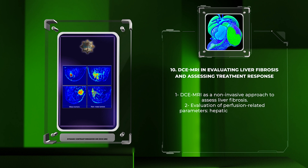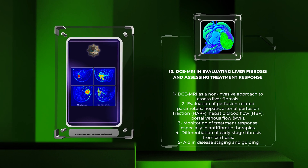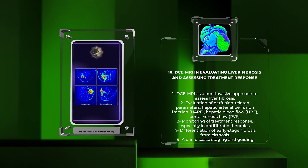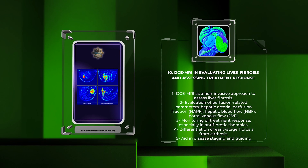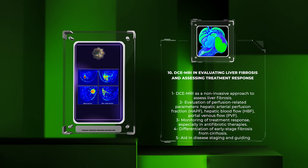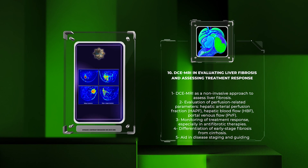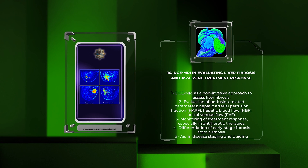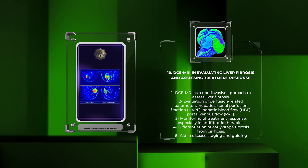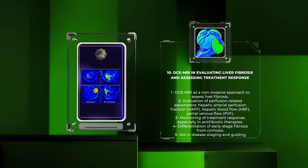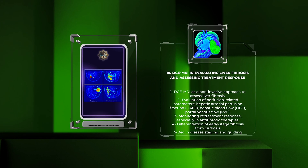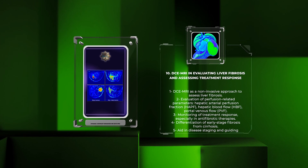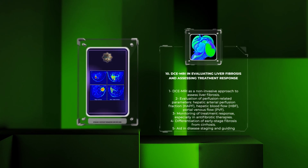Liver fibrosis is a common consequence of chronic liver diseases and poses a significant health burden worldwide. DCEMRI offers a non-invasive approach to assess liver fibrosis by evaluating perfusion-related parameters such as hepatic arterial perfusion fraction (HAPF), hepatic blood flow (HBF), and portal venous flow (PVF). Moreover, DCEMRI can be instrumental in monitoring treatment response, particularly in the context of antifibrotic therapies. Early studies have shown promising results in differentiating early-stage fibrosis from cirrhosis, aiding in disease staging and guiding therapeutic interventions.